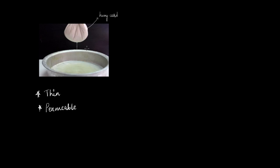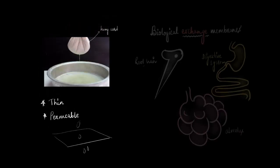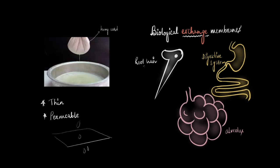Now, with this whole hung curd and muslin cloth story, the point I want to drive home is that if you want to allow something to pass through a surface, then the best surface would be the one that is very thin and permeable to whatever needs to pass through it, right? Now, I want you to relate this to membranes in the biological world, membranes in plants and animals which we often call the biological exchange membranes.